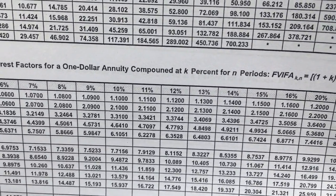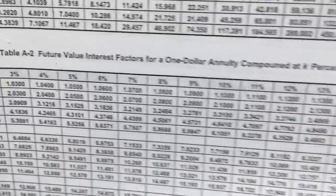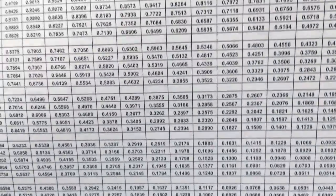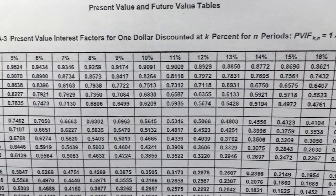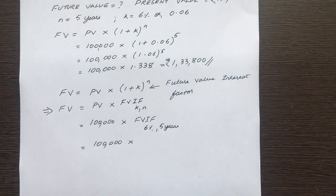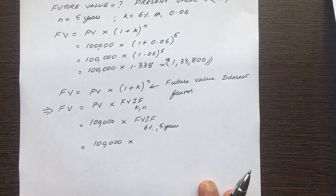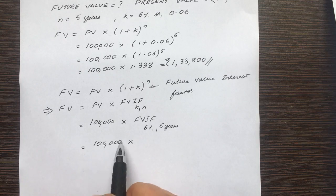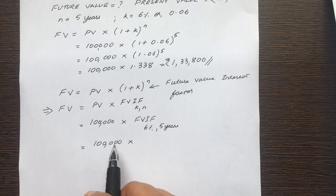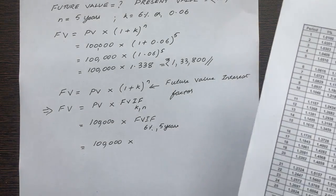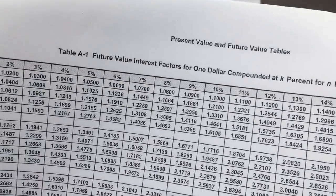Table 1 is different from table 2 — the values are different. Then you have the present value interest factor for 1 rupee discounted at k%, and table 4 is the PVIF present value interest factor for a 1 rupee annuity. So you have four different tables. Now this problem — is it an annuity problem? No, it is not an annuity problem because we are dealing with one single cash flow, so we use FVIF, the future value interest factor.